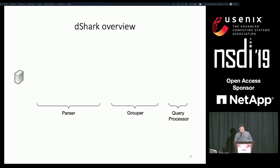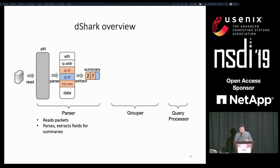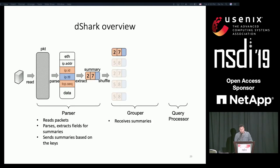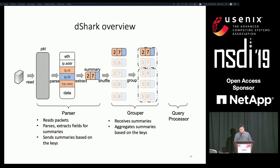A high-level overview of DShark looks like this: the parser reads from a packet stream, parses and extracts fields to form a summary based on the specification. Then it sends summaries with the same key to the same grouper. The grouper receives summaries, aggregates them based on keys, and sends each group to the query processor. The query processor performs analysis logic on each group and returns the result to the user.